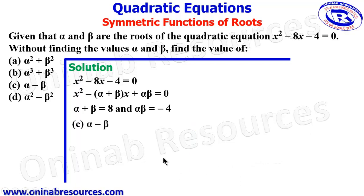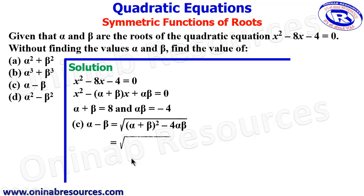Then we go to part (c), alpha minus beta. Alpha minus beta gives square root of alpha plus beta squared minus 4 alpha beta. This is an algebraic identity we need to have in our memory. We then substitute alpha plus beta and alpha beta into this expression. So we now have it as square root of 8 squared minus 4 times negative 4. This is giving us square root of 80.